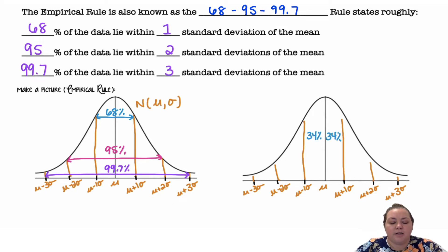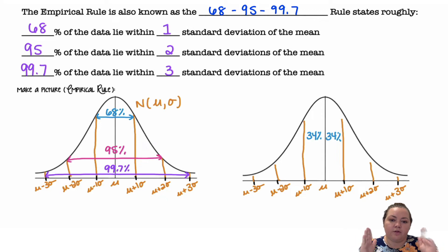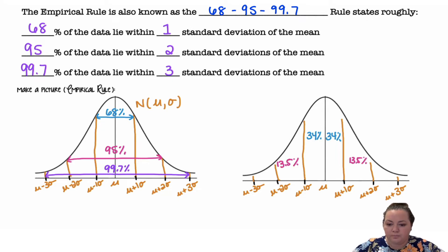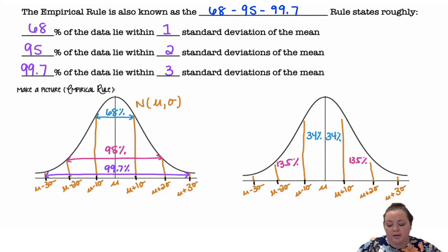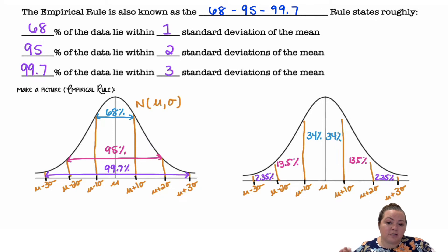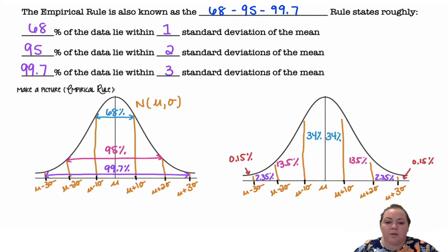Now I'm going to break that normal distribution down into each section to find how much each piece is worth. If I have 68% in the middle and divide by two, I get 34% for each section. The next section out to 95%: subtract the middle 68% and divide by two to get 13.5%. Then 99.7% minus 95% divided by two gives 2.35%. And 100% minus 99.7% divided by two gives 0.15%. So now I have the percent that falls in each little section.